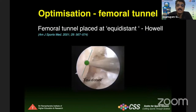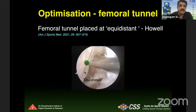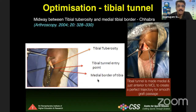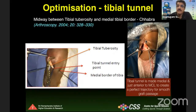The femoral tunnel is first chosen through a guide wire through the medial portal. We follow the Howell technique where the tunnel is placed at equidistance on the femoral footprint. Too high creates a rooftop impingement position and will fail; too low is more of the posterolateral bundle and has also been shown to fail. So we use the equidistant position. For the tibial tunnel entry point, we use the Chabra technique, where the entry is midway between the tibial tuberosity and the middle part of the tibia — rather than close to the tibial tuberosity — giving a good trajectory toward the anatomical footprint.